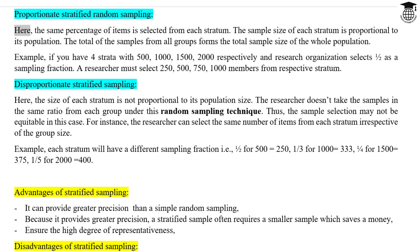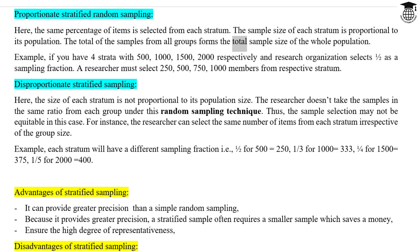Proportionate Stratified Random Sampling. Here, the same percentage of items is selected from each stratum. The sample size of each stratum is proportional to its population. The total of the samples from all groups forms the total sample size of the whole population.